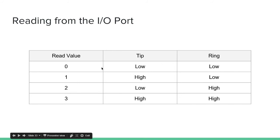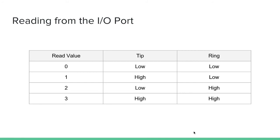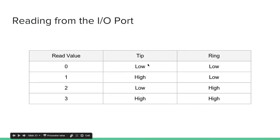Here are the read values. A 0 means tip is low and ring is low. A 1 means tip is high and ring is low. A 2 means tip is low and ring is high. A 3 means tip is high and ring is high. This is an inverted table from the write values. If you treat the tip as the one's place in binary and the ring as the two's place, it's counting up: 0, 1, 2, 3.